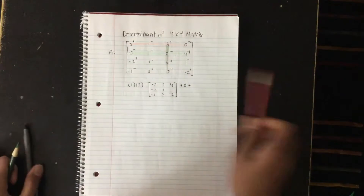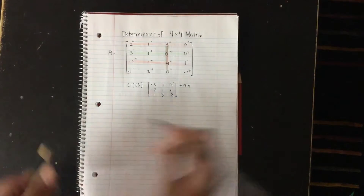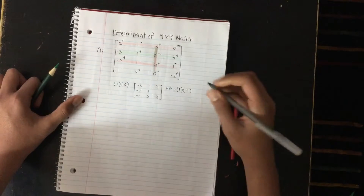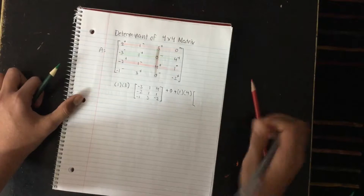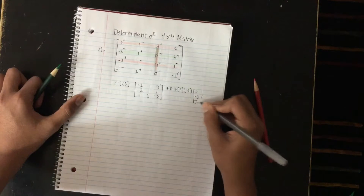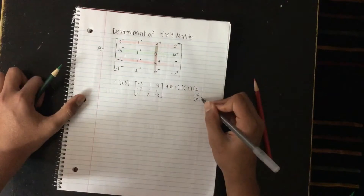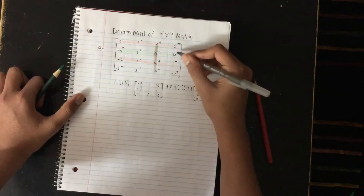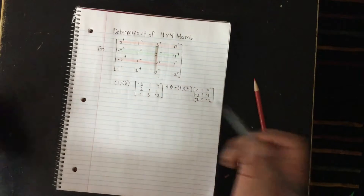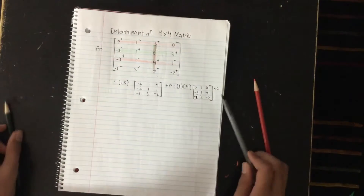You do the exact same thing with the other numbers in the column. You cross out this column again and cross out this row. You're going to get positive one times positive four, and then you write the other matrix: 2, 1, negative 3, 1, negative 1, 3, 0, 4, and negative 2. As you can see, the last number is also zero, so I can just write plus zero — don't need to go through drawing another matrix and multiplication.